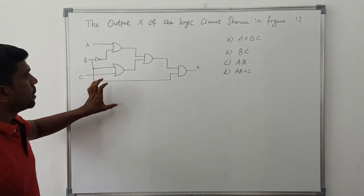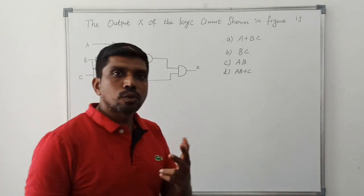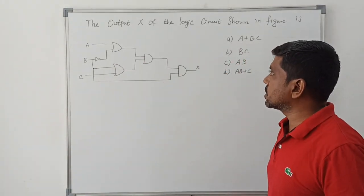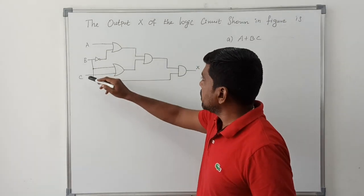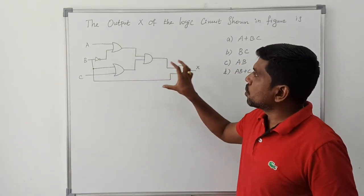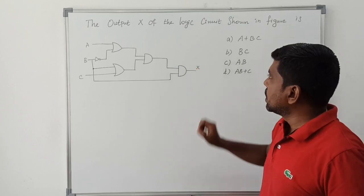So it is a given figure. In this circuit consists of 2 OR gates and 2 AND gates. It is a 3-input logic circuit. The 3 inputs are A, B, C and output is X. So after solving this circuit, what is the output expression for X?